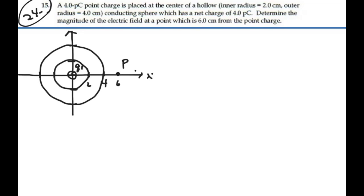This outer sphere has a total charge of Q2, which is also equal to 4 picocoulombs. Q1 is also 4 picocoulombs. So we have this positive charge here, and then this positive charge in the middle.